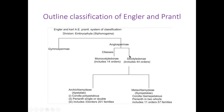Engler and Prantl divided angiosperm on the basis of the number of cotyledons into two classes. These classes are: first, monocotyledonae, in which the seeds have only one cotyledon — divided into 14 orders; and dicotyledonae, where the seed embryo has two cotyledons — includes 44 orders. The dicotyledon class is divided again on the basis of apetaly or sympetaly.